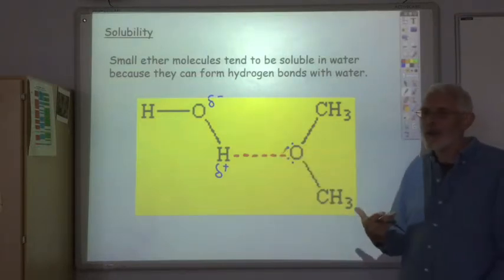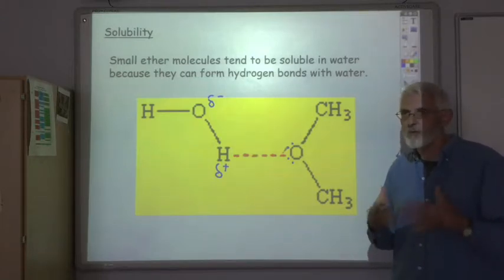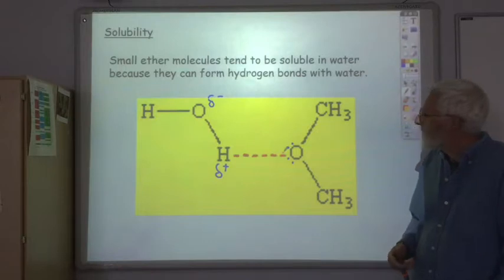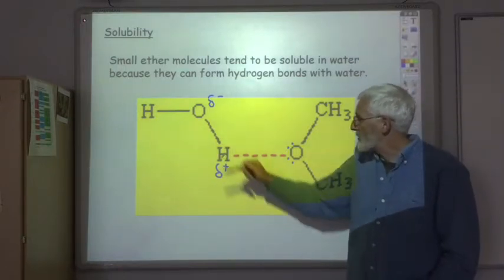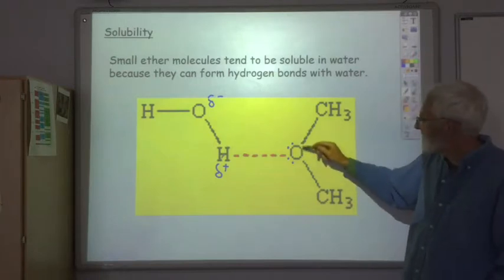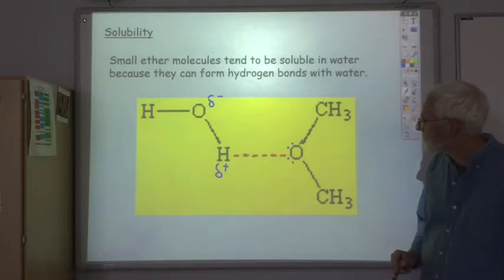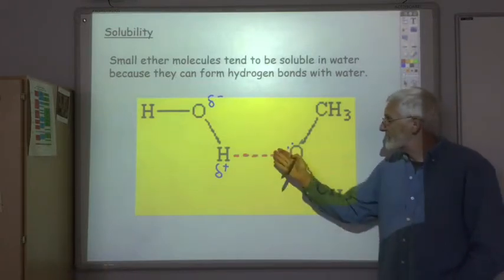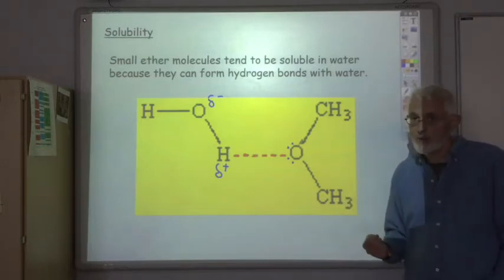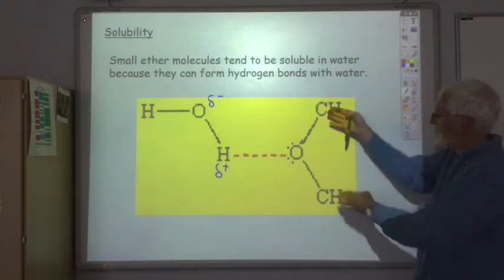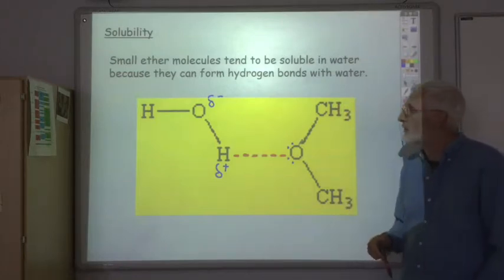It's not like the classic form of hydrogen bonding that you've considered so far which has always been between molecules of the same type, but the attraction between the positive hydrogen on the water molecule and the very electronegative oxygen in the ether is hydrogen bonding. And it's strong enough that attraction so that small ether molecules are soluble in water. However as the size of the alkyl groups get bigger they get less and less soluble in water.